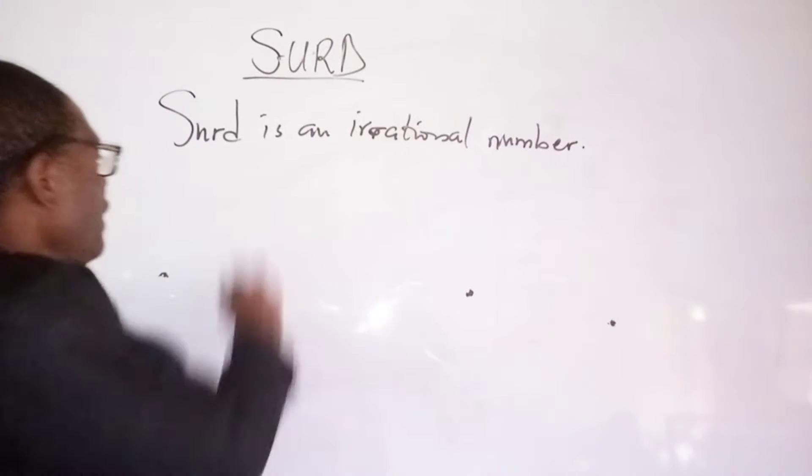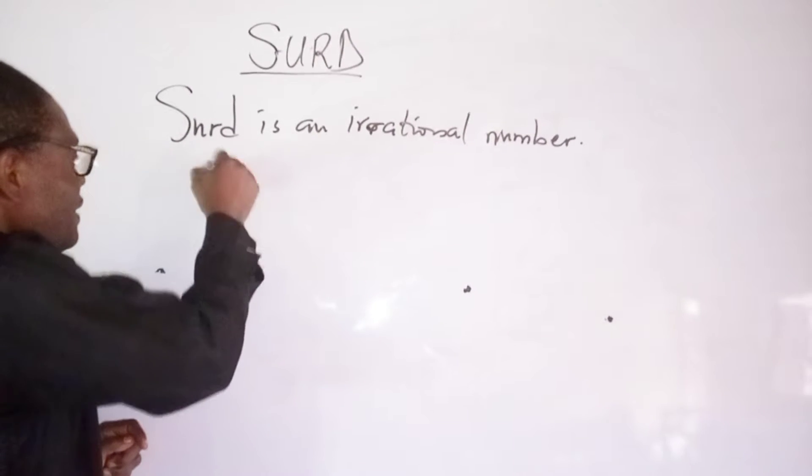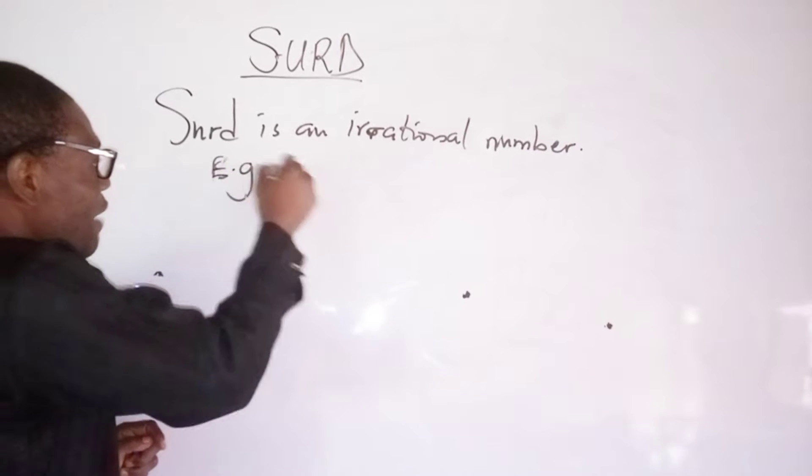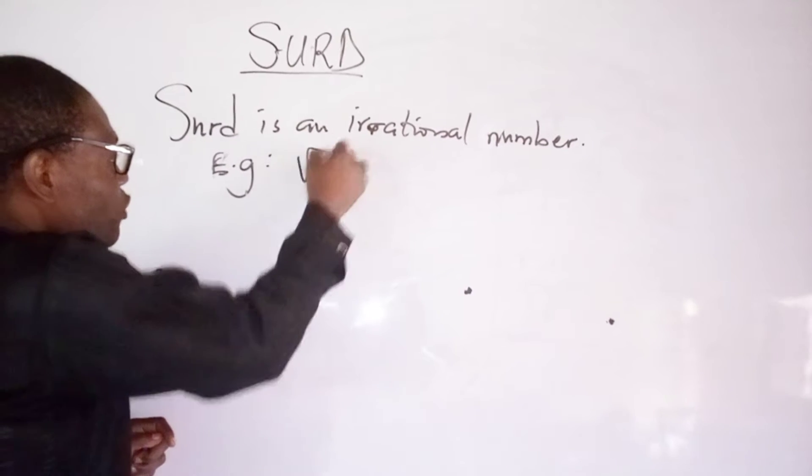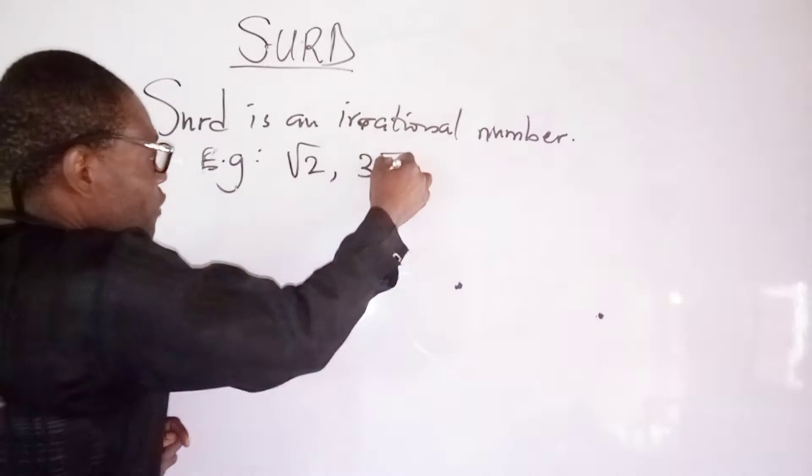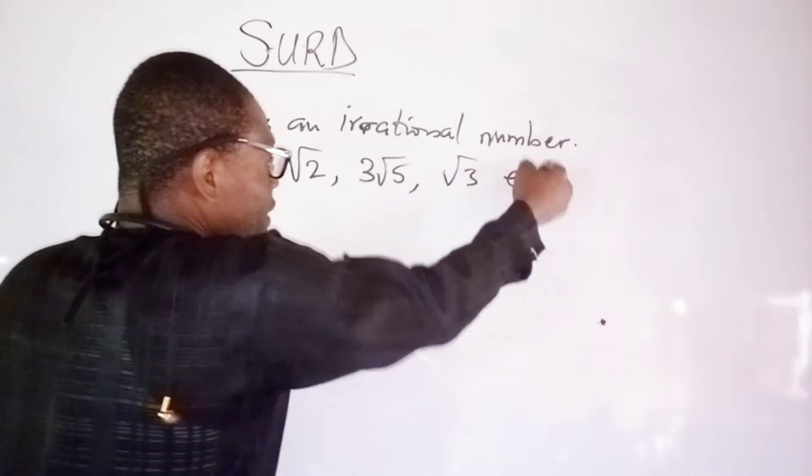So, if I have... Now, this is an example of a surd. If I have square root of 2, 3 square root of 5, and square root of 3, etc.